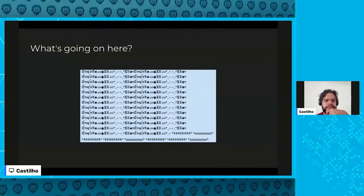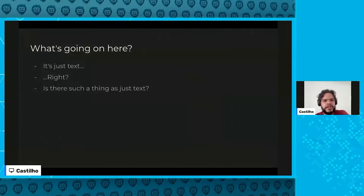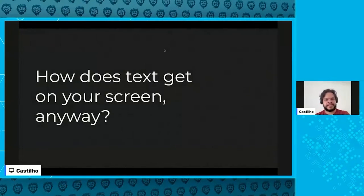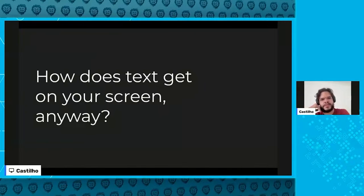How can something that is just text cause your phone to crash? There are some messages like this that look weird, but there isn't really anything there — it's supposedly just text. To answer what's going on with those WhatsApp messages, we need to understand how text gets onto your screen, because the exploit works by exploiting that process.